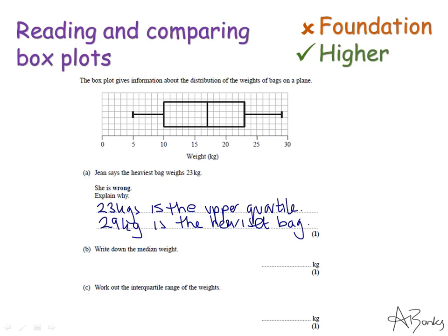The next question says write down the median weight. So the line in the centre of the box shows me the median. So that's this line here. So the median weight is 17. Again a nice simple question.